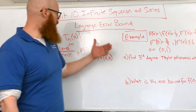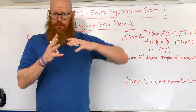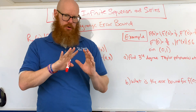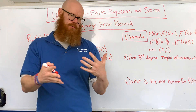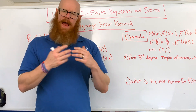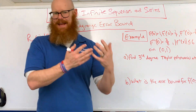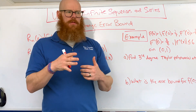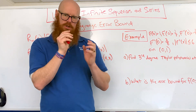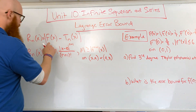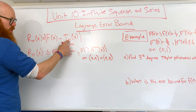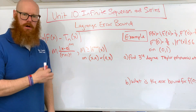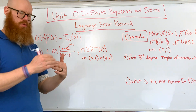Now let's look at the Lagrange error bound. When you use a Taylor polynomial to approximate a function and you don't take the series out to infinity — just, say, 3rd, 4th, or 5th degree — there's going to be an error. You'll be off by some amount. The exact value is f(x), and if you subtract the Taylor polynomial at degree n, you get a gap. Taking the absolute value of that difference is what we call the remainder — your gap from the approximation to the actual answer.